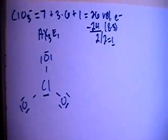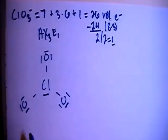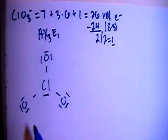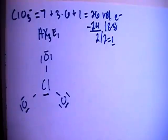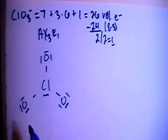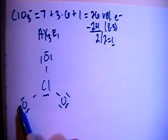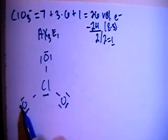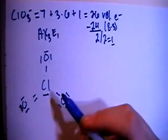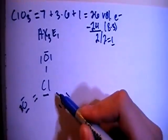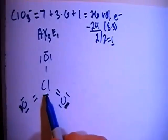And at first you might think that this is the right structure, but if you were to check the formal charges on the atoms as they are now, you'd find that you have plus 2 on the chlorine, and that's really not what you're looking for. You're trying to get all zeros or as close as possible. So what we're going to end up doing is moving not only just one of these pairs to form a double bond, but we're going to actually move two of these pairs to form two double bonds to the chlorine.